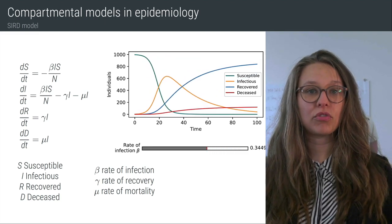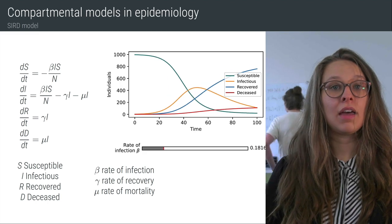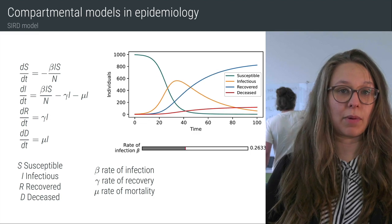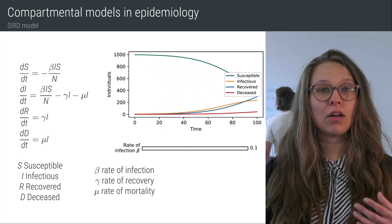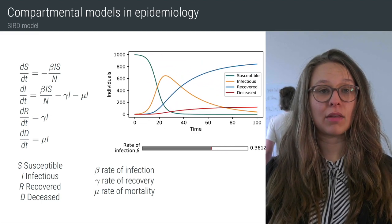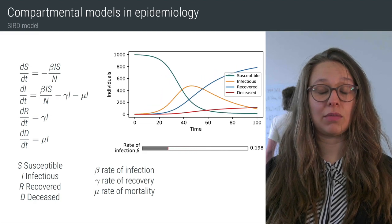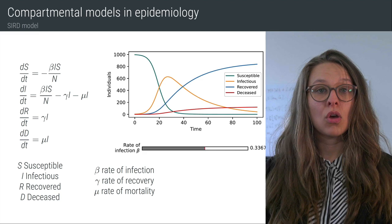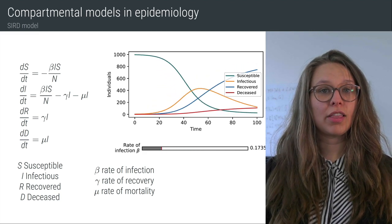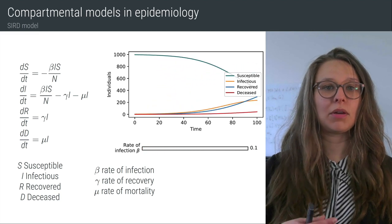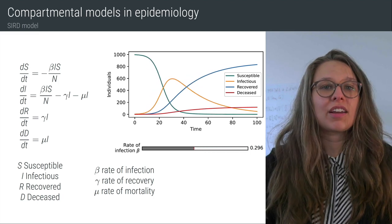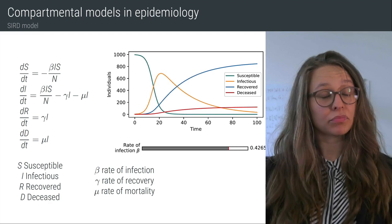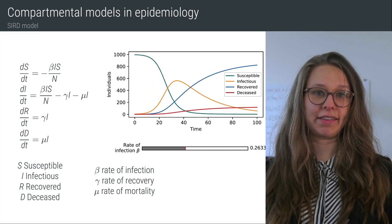The parameter beta in these equations describes the rate of infection. One way of changing this parameter beta is by social distancing, which leads to a decrease in the value of beta. If we are lowering the value of beta, then we can observe the effect shown in the animation, which is also known as flattening the curve. We also observe that there is a non-linear dependence between the parameter beta and the model. So if we are given some data and we want to infer the value of beta, then this becomes a non-trivial task.